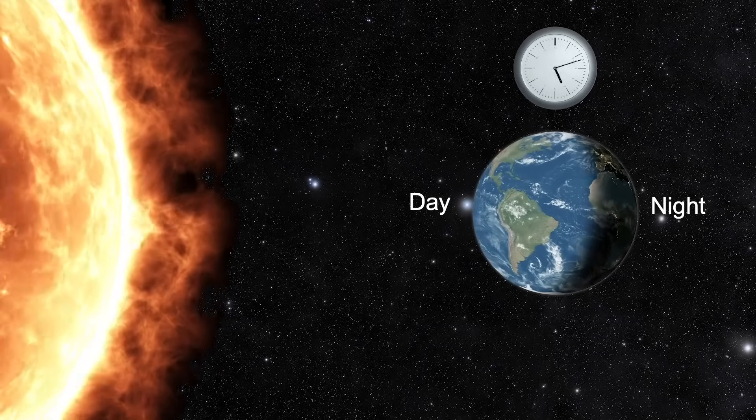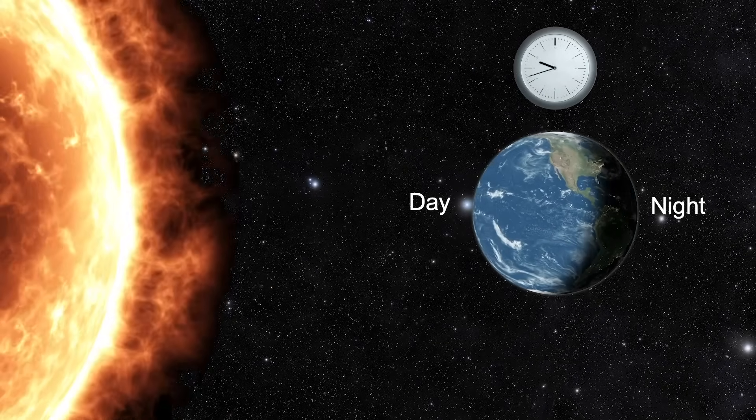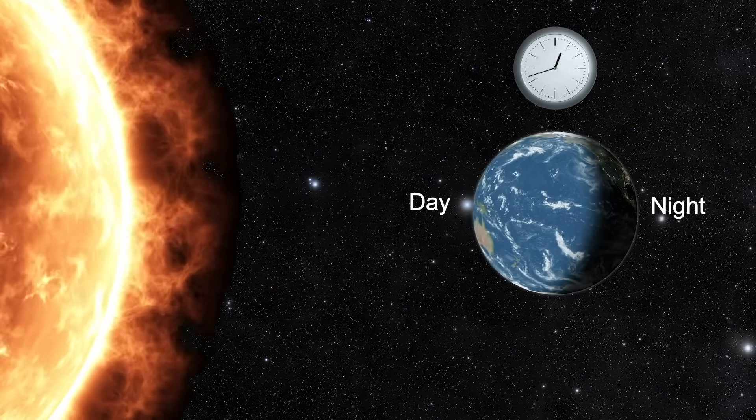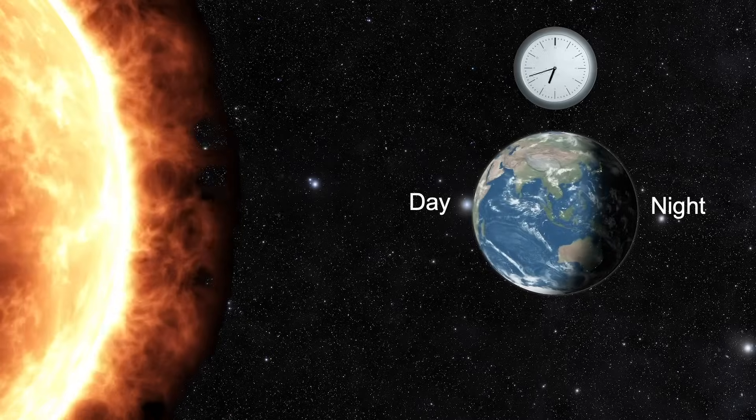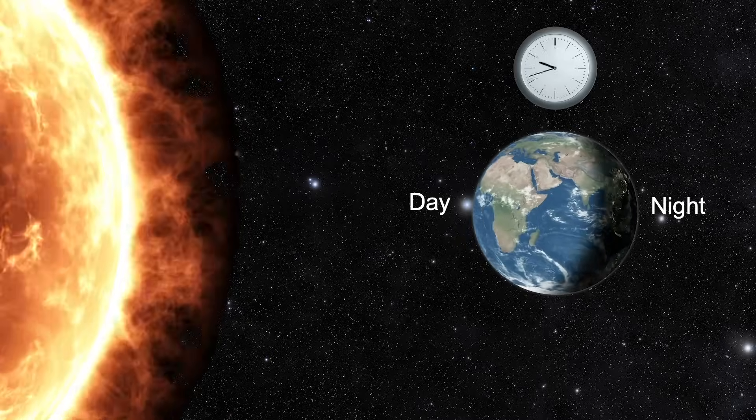It takes the Earth 24 hours to complete one rotation. The repeating rotation of the Earth is why we experience the daily pattern of day and night.